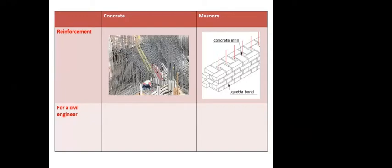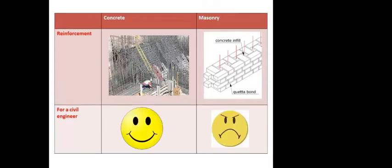Concrete can go into every nook and corner and becomes one huge homogeneous, massive, and robust structure. Masonry is not like that — it has to be constructed and still depends on the skill of the construction worker. The mason plays a very important role in masonry; it's almost bordering on the verge of being an art compared to concrete. For a civil engineer, concrete is preferred, whereas masonry is less favored. Concrete has far outshone masonry in many structural aspects.